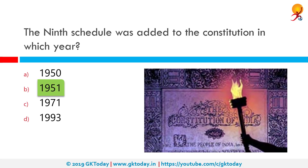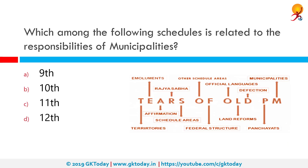The ninth schedule was added to the constitution in which year? The correct answer is 1951. The ninth schedule to the Indian Constitution was introduced through Article 31B by the First Constitution Amendment Act 1951. The object of the ninth schedule was to save land reform laws enacted by various states from being challenged in the courts, to facilitate agrarian reforms of the Government of India.